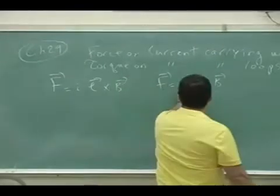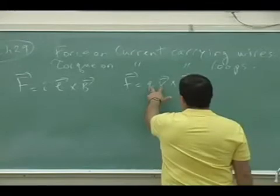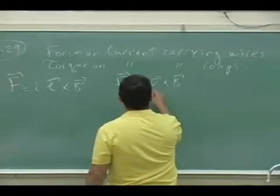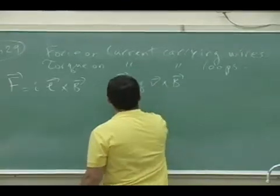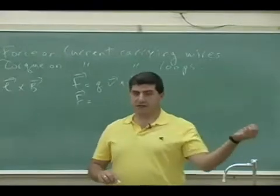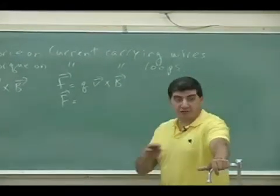If you take this one you can derive that one because if you really think about it, the charge per velocity, if instead of a single charge moving at a velocity V, you have a bunch of charges.